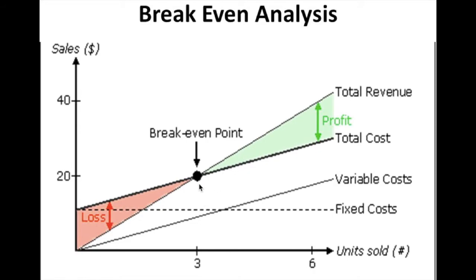In this example, after selling three units — that means three glasses of sugarcane juice — the businessman will get his profits. You can observe in the diagram that after selling three glasses of sugarcane juice, the business enters the profit zone. Before selling three units, the business runs in losses.